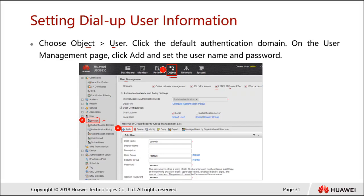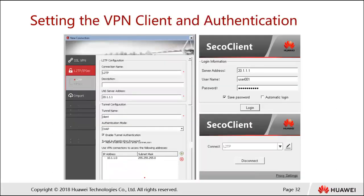The next steps involve user management. We configure the type of user for L2TP. Then we create a user account by pressing the Add button, which brings up the creation screen. Here we type in the username, display name, description, and password. That completes the configuration on the LNS side, which is the firewall side. Now we need to configure the client side.